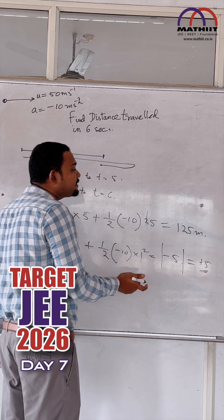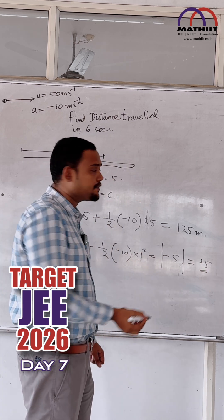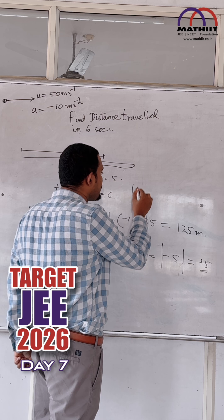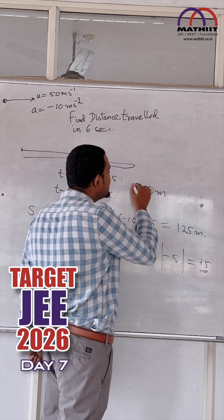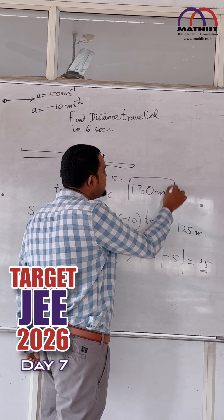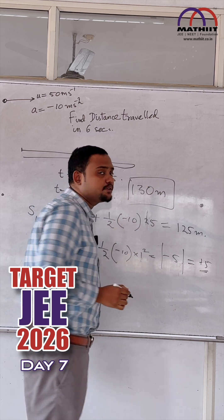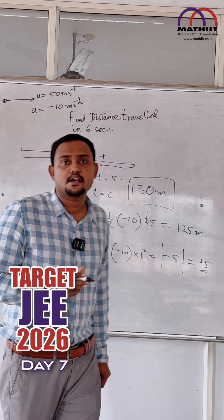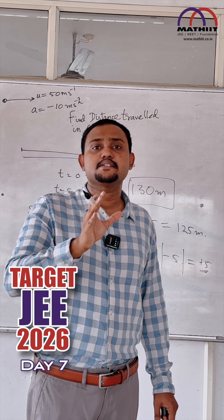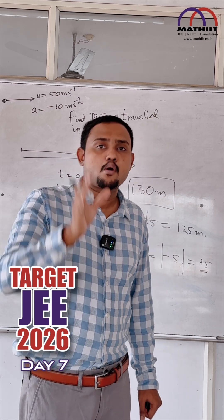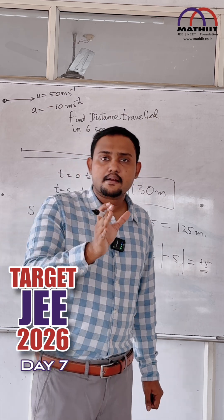So the total distance traveled by the body is 130 meters. If you directly use s equal to ut plus half at squared, you are going to get the answer as 120 meters, which is wrong.